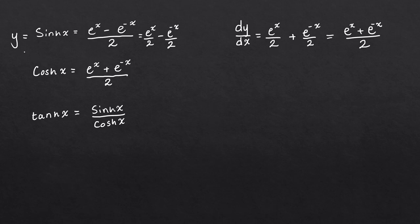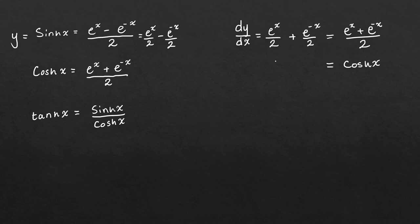So if you differentiate hyperbolic sine, you get hyperbolic cosine — dy/dx equals cosh x. That's our first result. And as you can see, it's really straightforward to derive — it's just basic differentiation of the exponential function.